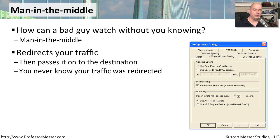The bad guy sets up some mechanism so that instead of you talking directly to a different server, your traffic is sent to a middleman. All of that traffic flows through the middleman — both going to the server and back to the workstation — and he's able to see everything going by.